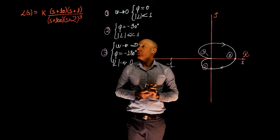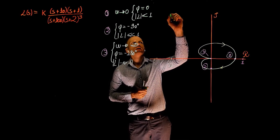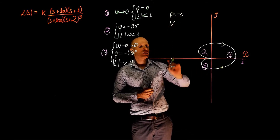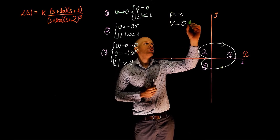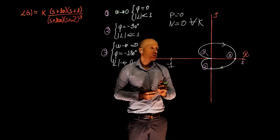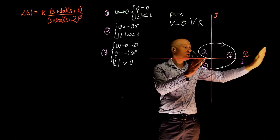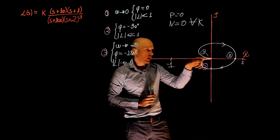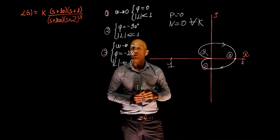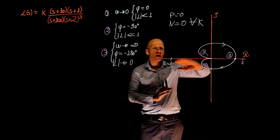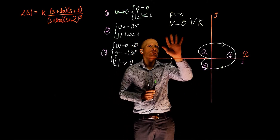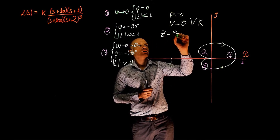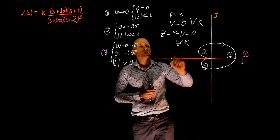The system has no unstable poles in the open loop, so p equals zero. The number of encirclements of negative one is also zero for all values of k. If we increase k, everything expands, but since we are going to zero following negative 180 degrees, we will never be encircling negative one. We may get very close to negative one, but never encircling it. The system is always stable because z equals p plus n is always zero for all values of k greater than zero.